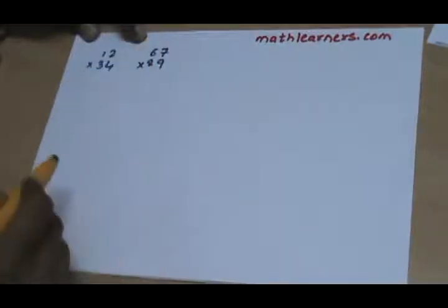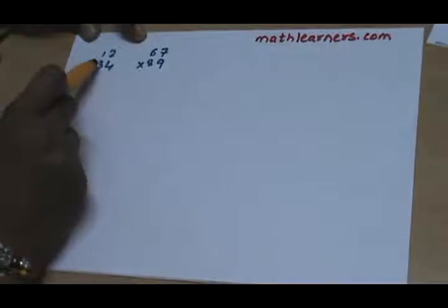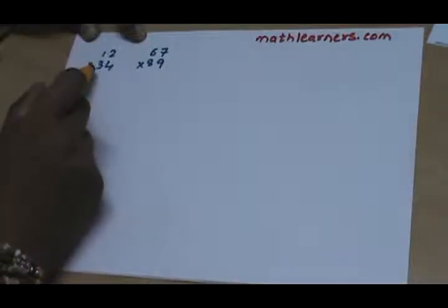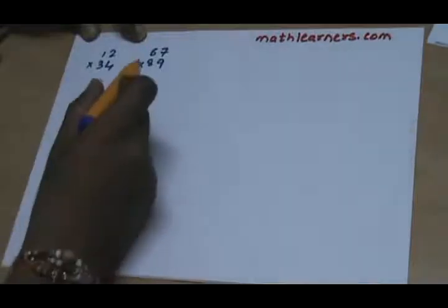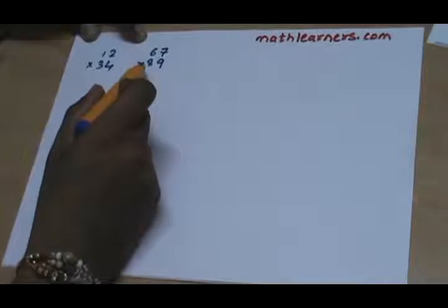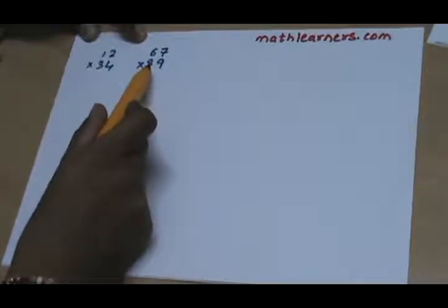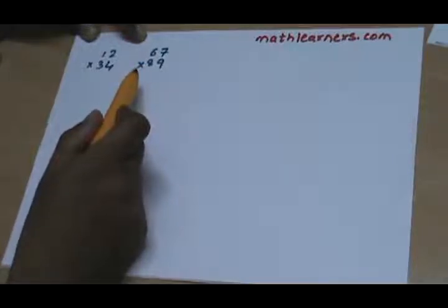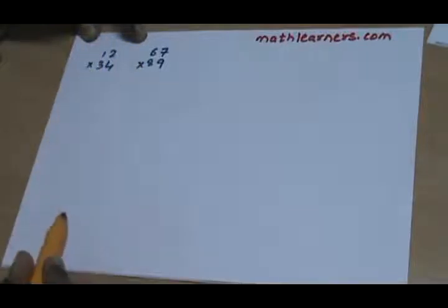Let's say suppose we want to multiply numbers 12 and 34, and another set of numbers 67 and 89. Obviously multiplication of 12 and 34 is simpler compared to 67 and 89, and the only reason is both numbers contain digits less than 5. So if there is any process by which we can convert digits 6, 7, 8, 9 to smaller digits like 1, 2, 3, 4, the multiplication will become very simple.